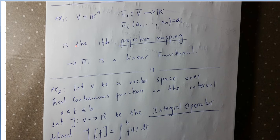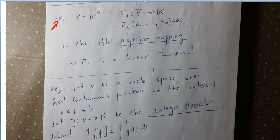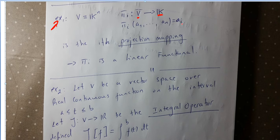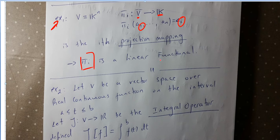Now let's look at some examples from my notes. Example one: let V be K^n, and let the projection mapping pi_i take from the vector space to the field. Pi_i maps a vector (a1, a2, ..., an) to its i-th component, a_i. So pi_i is the projection mapping, and it is a linear functional.